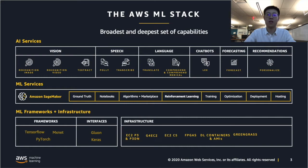Let's talk about how Amazon SageMaker fits into the broader machine learning and AI stack at AWS. At the top of the machine learning and AI stack, there are our application services. Those are the tools like Rekognition, Textract, Polly, Transcribe, Lex, Comprehend, and Personalization.